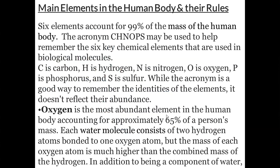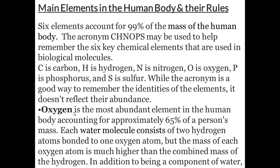The six main elements account for 99% of the mass of the human body. The acronym CHNOPS — Carbon, Hydrogen, Nitrogen, Oxygen, Phosphorus, Sulfur — helps remember the key chemical elements used in biological molecules. However, this acronym does not reflect their abundance. Oxygen is the most abundant element in the human body, accounting for approximately 65% of a person's mass, because oxygen is present in water (H₂O) and in many compounds.